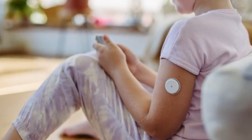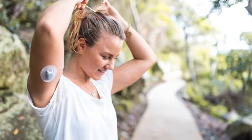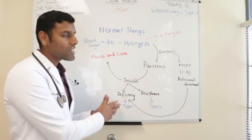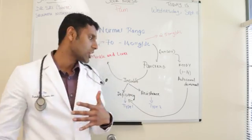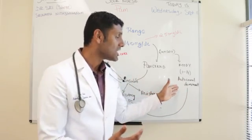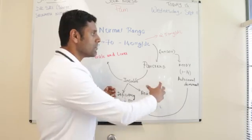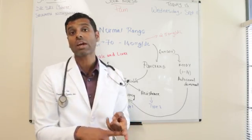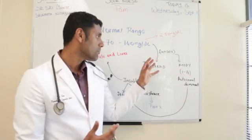Patients with maturity onset diabetes of the young present at an early age — they are usually diagnosed before age 25. They are typically non-obese, since it is not an insulin resistance issue but an insulin deficiency issue. They mimic type 1 diabetes, except that blood sugars in MODY are usually around 200–300, not as extremely high as in type 1. This creates a diagnostic challenge, because during the initial phase of type 1 diabetes blood sugars may also not be extremely high, making the two conditions appear similar.